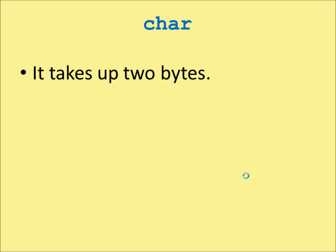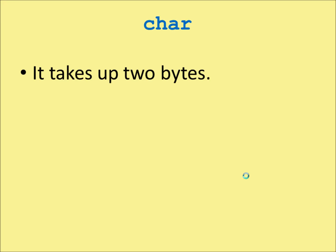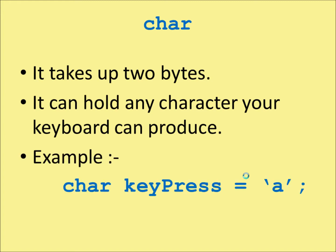Char takes up two bytes, because it can hold any character on the keyboard, and for that there are about two million possibilities. For example, you'd declare: char keypress = 'A'. The single quotes are used for chars.